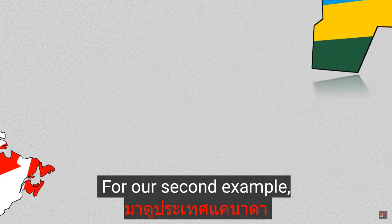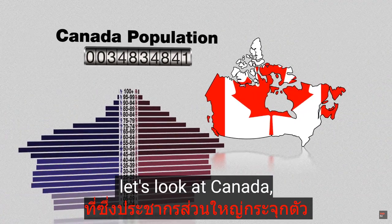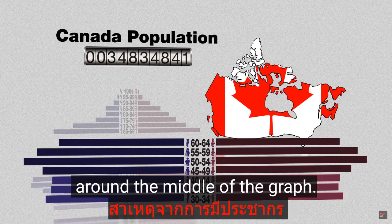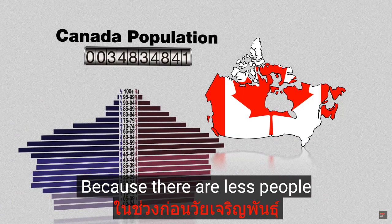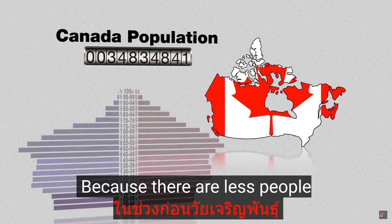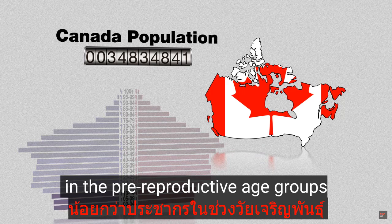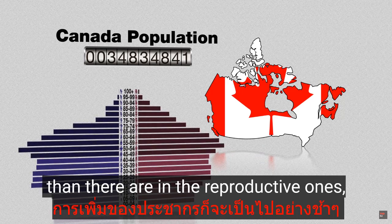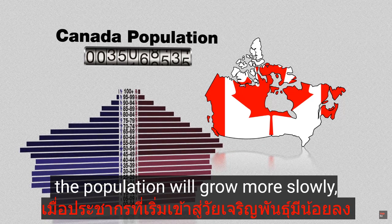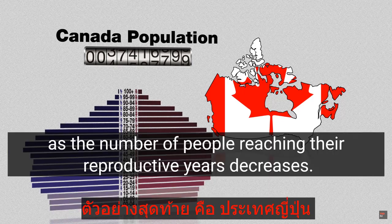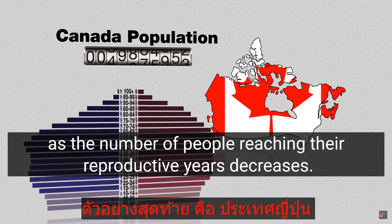For our second example, let's look at Canada, where most of the population is clustered around the middle of the graph. Because there are fewer people in the pre-reproductive age groups than there are in the reproductive ones, the population will grow more slowly, as the number of people reaching their reproductive years decreases.